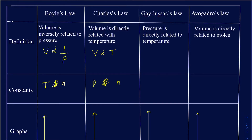The next law is Gay-Lussac's Law, which relates pressure with temperature. If pressure increases, temperature also increases. For example, if you leave a soda can in a car on a hot summer day, you're increasing the temperature and there will be a buildup in pressure from the pressurized carbon dioxide inside. When relating pressure and temperature, volume and moles are kept constant.